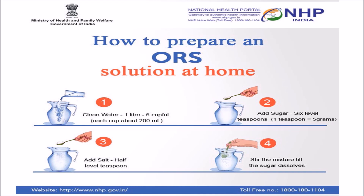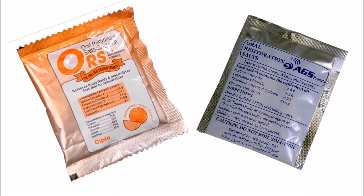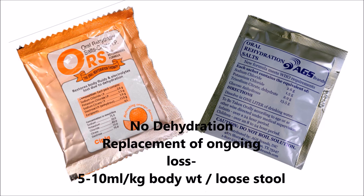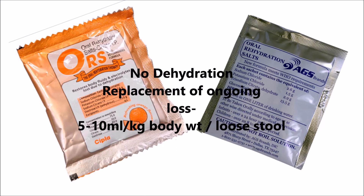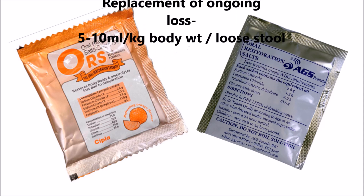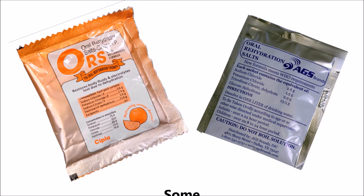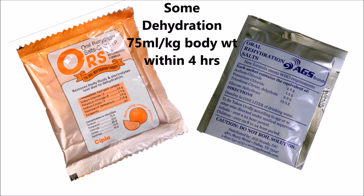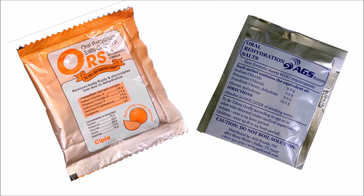Regarding doses: if there is no sign of dehydration, replace ongoing losses at a rate of 5 to 10 ml per kg after each loose stool. If some signs of dehydration are present, give 75 ml per kilogram within four hours, and provide ORS as much as the child can drink.